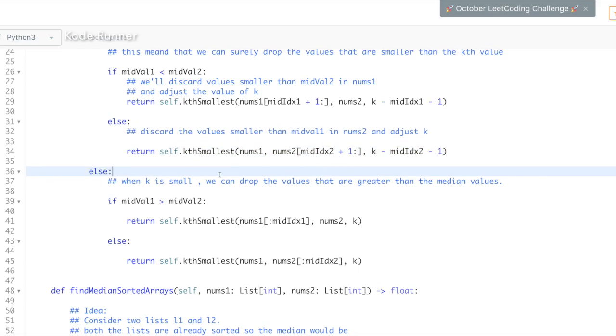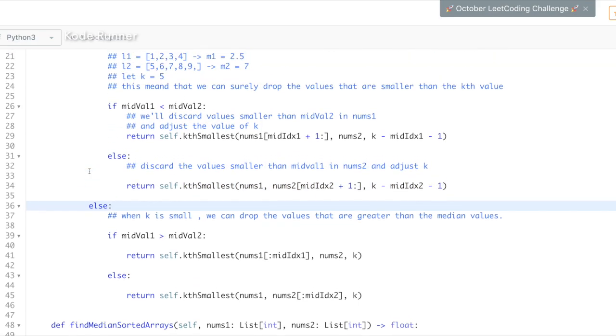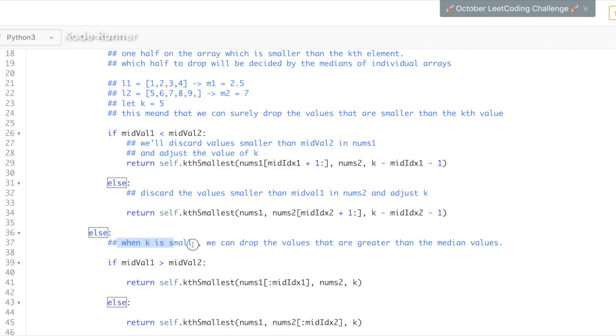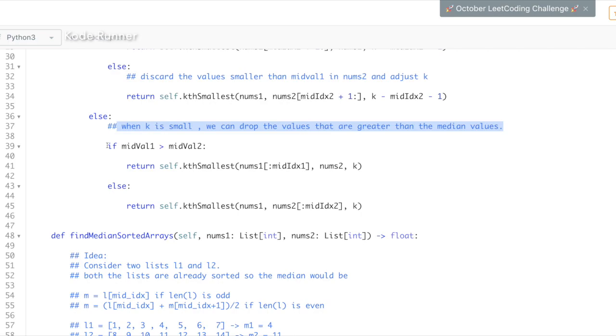Now, we will handle the second case. Here, the value of k is smaller than the combined mid-indices. This means that now we can drop one half of the array which is more than the kth element and call the kth smallest function again.